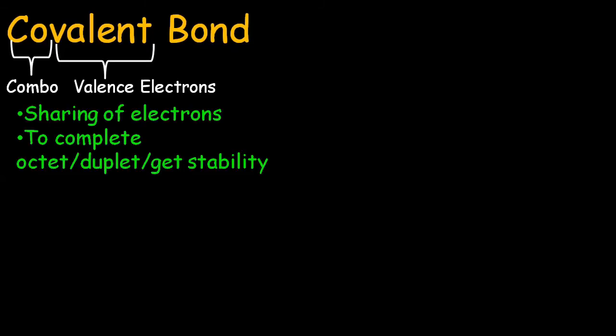Now let's talk about the second chemical bond that is covalent bond. Co means combo or combination and valent means valence electrons. Covalent bond is the combination of valence electrons. It develops by sharing of electrons.